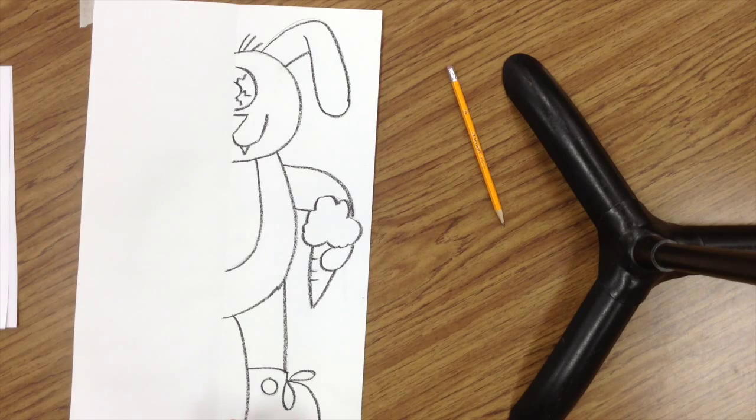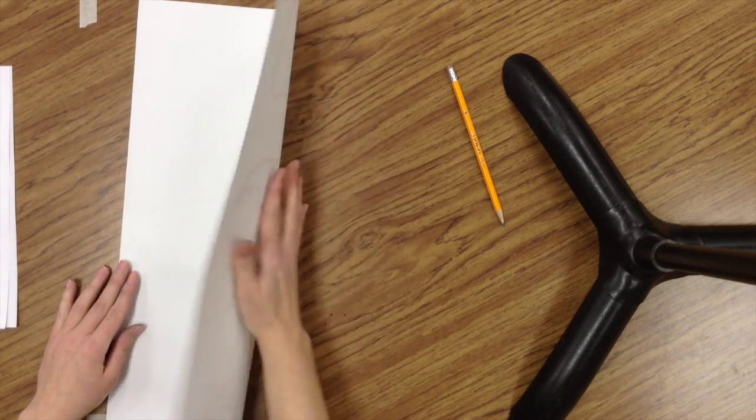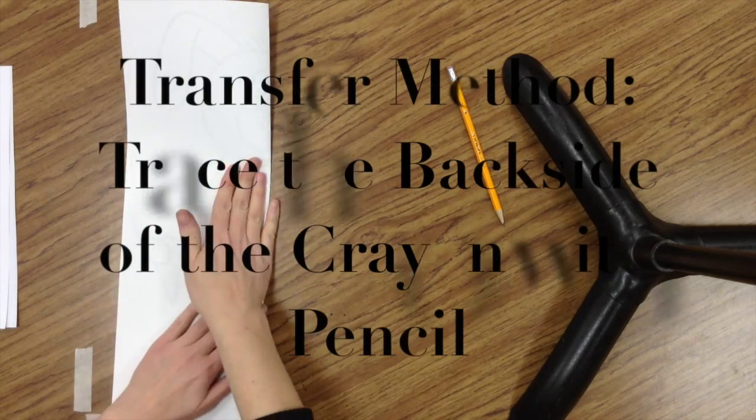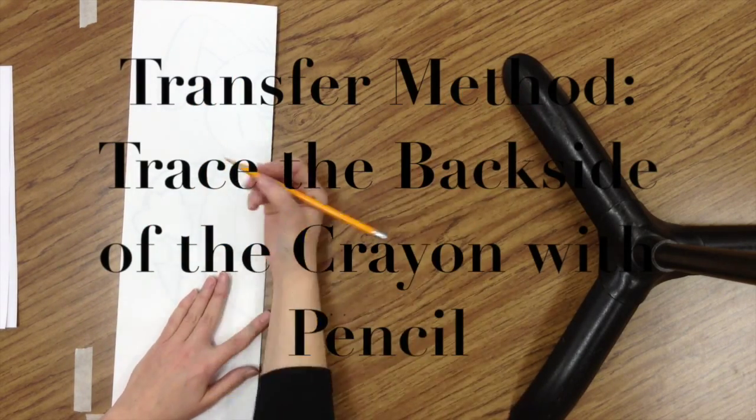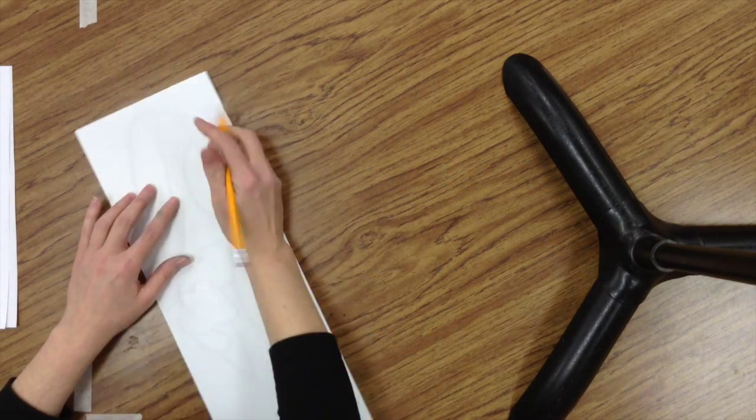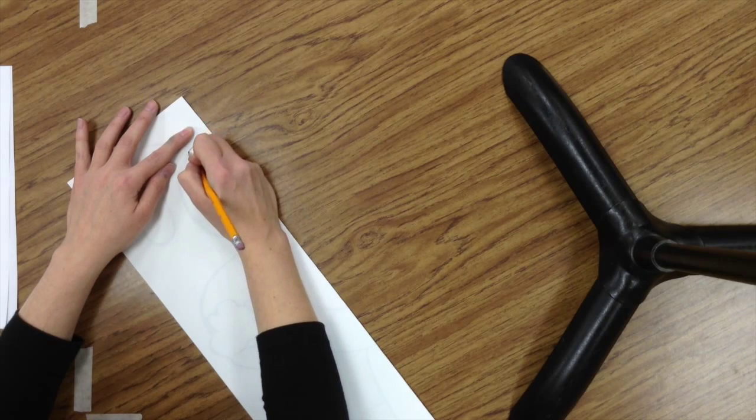We are going to begin the transfer method. We are tracing the back side of the crayon, so I'm refolding and I'm going to take a pencil and trace again my black crayon line.